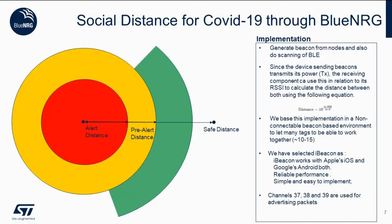Social distancing through Bluetooth LE can be achieved through beacons and scanning of Bluetooth LE nodes. Since the device sending the beacon advertises its transmit power, the receiving component can use the data in relation to its RSSI to determine the distance between both of them using the following equation.